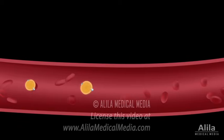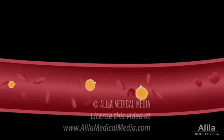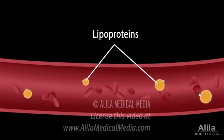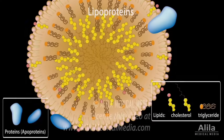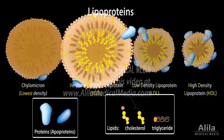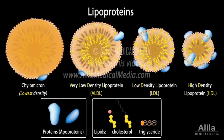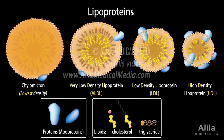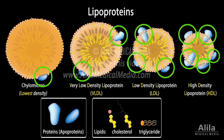Cholesterol, together with other lipids, is transported in blood plasma within large particles known as lipoproteins. A lipoprotein is an assembly of lipids and proteins. Lipoproteins are classified based on their density. Because lipids are lighter than proteins, particles that contain more lipids are larger in size but have a lower density.